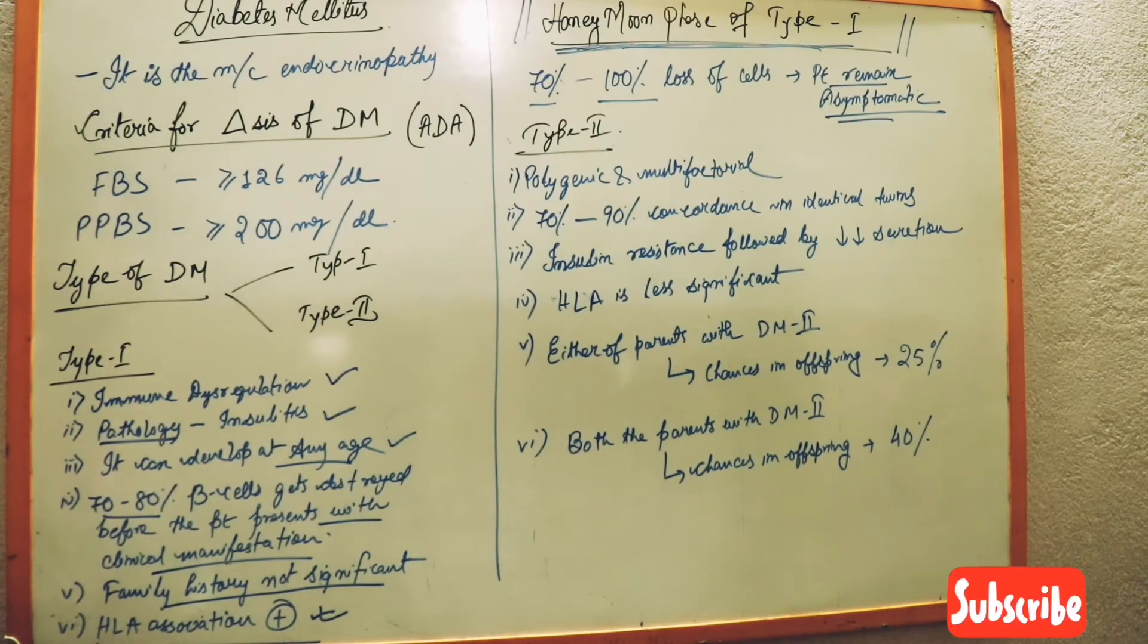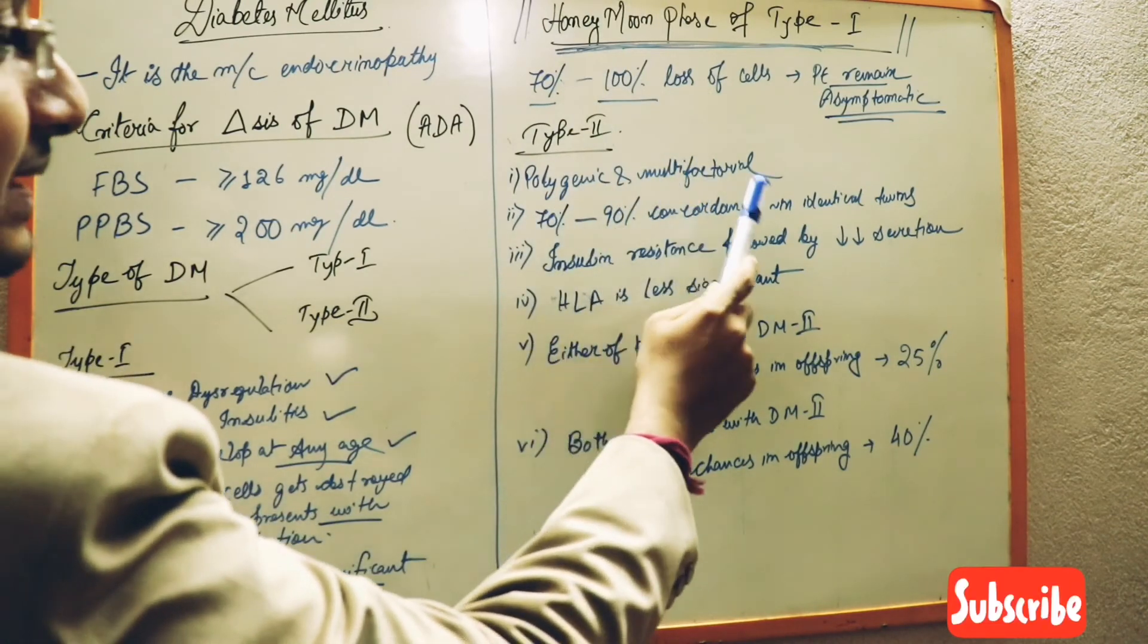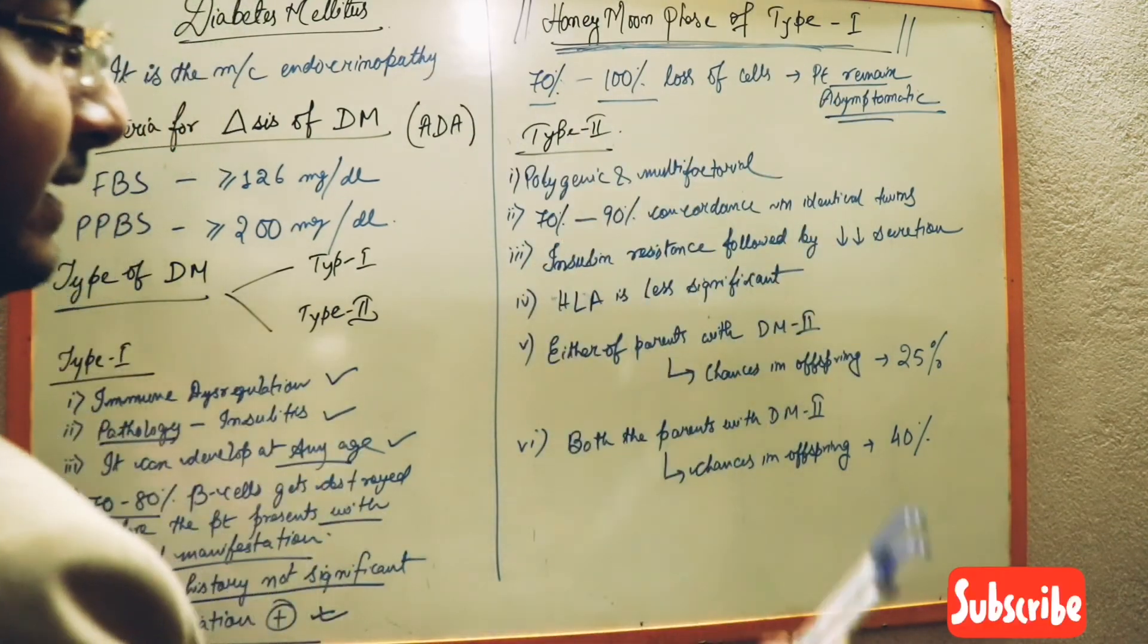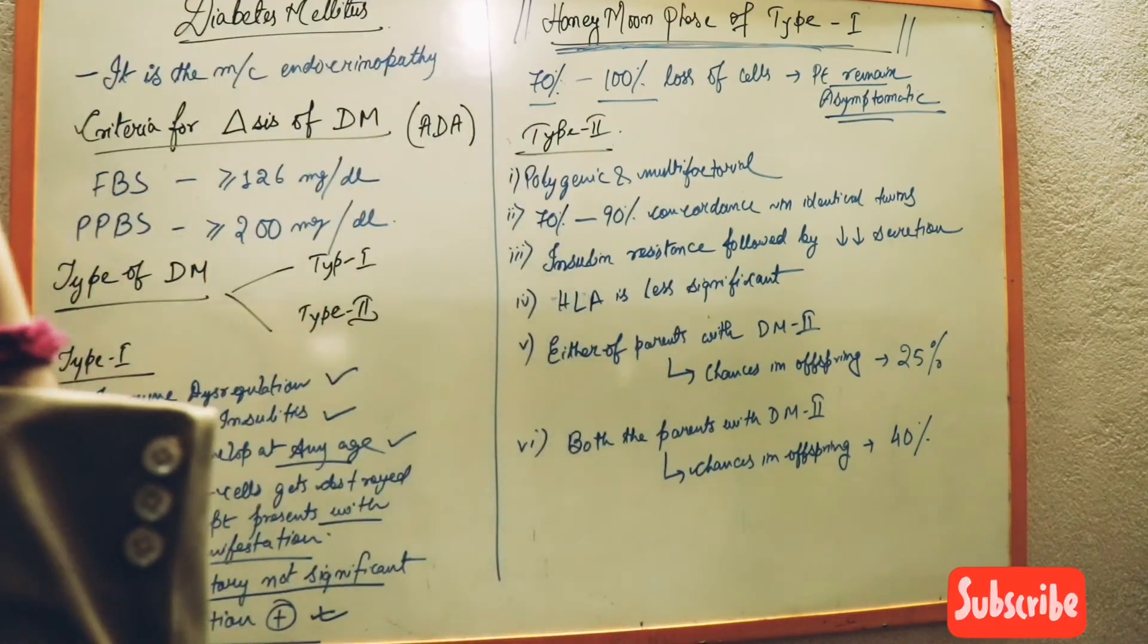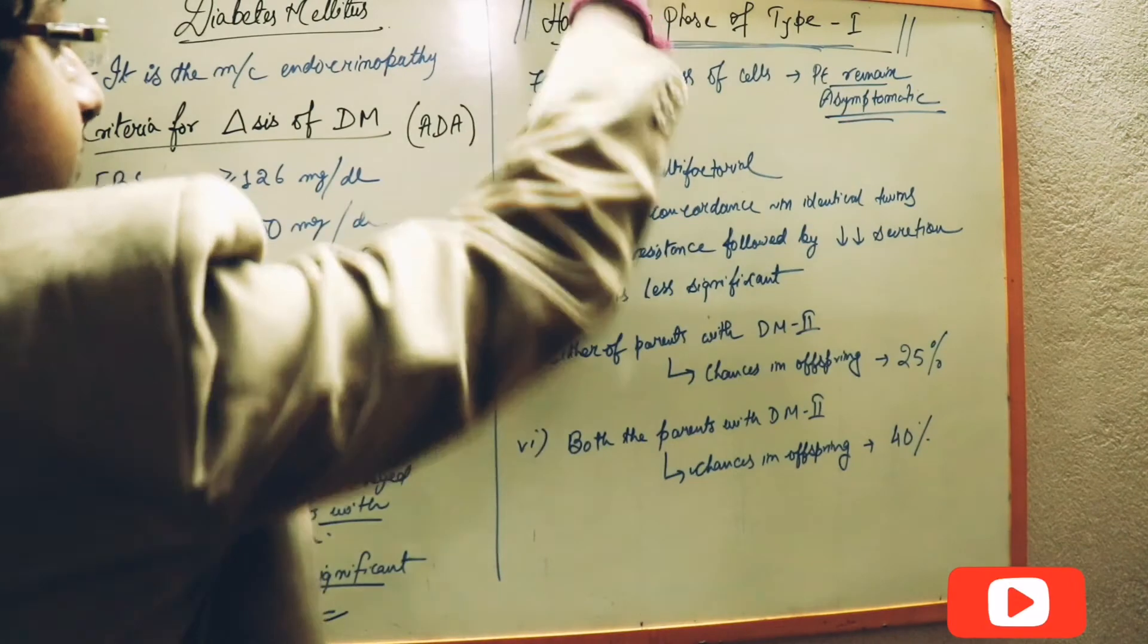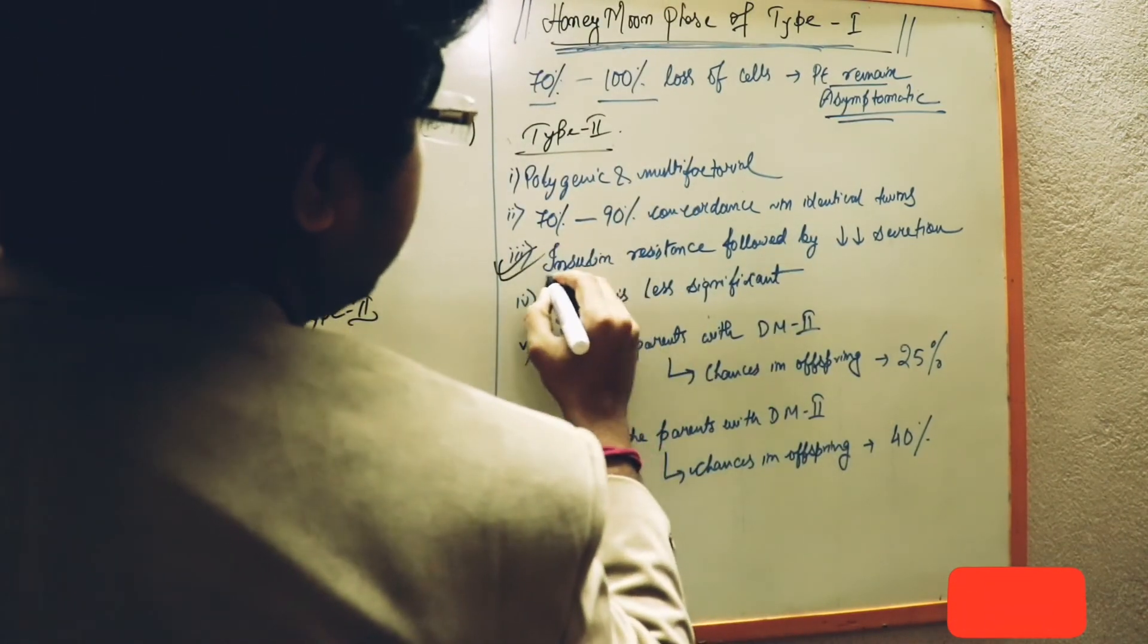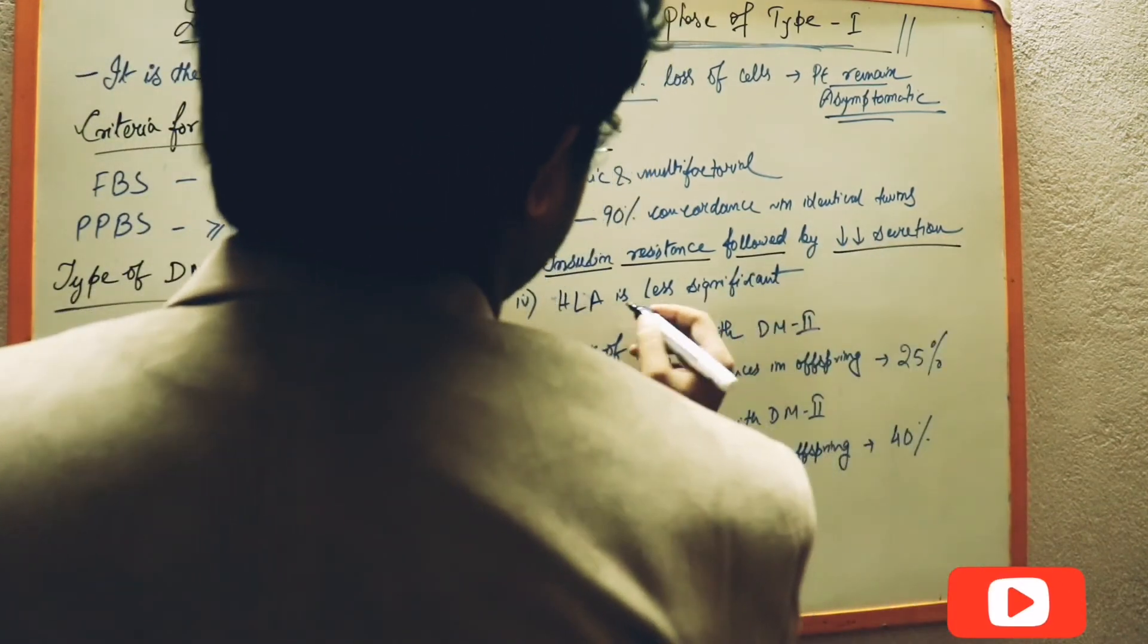Now we are presenting type 2 diabetes mellitus. It is polygenic and multifactorial, 70 to 90 percent concordance in identical twins. Insulin resistance followed by decreased beta cell secretion.